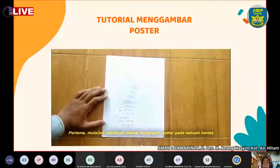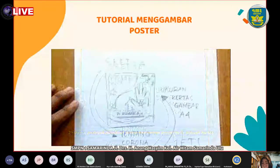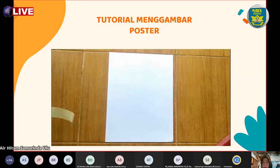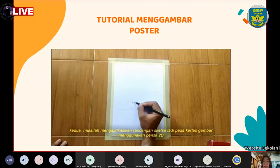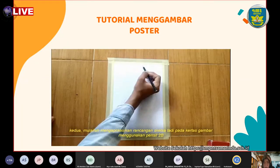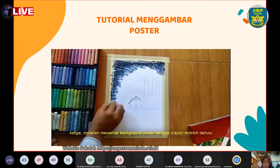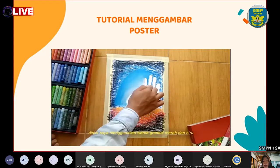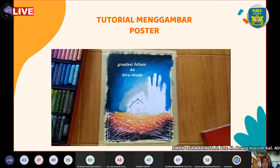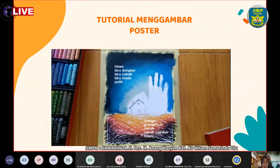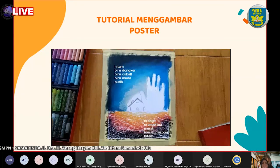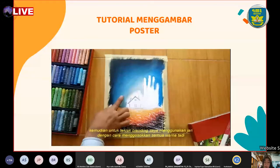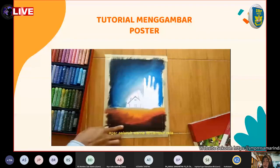Pertama, mulailah membuat sketsa rancangan poster pada sebuah kertas. Ini merupakan contoh sketsa poster yang hendak dibuat. Kedua, aplikasikan rancangan sketsa pada kertas gambar menggunakan pensil 2B. Ketiga, mulailah mewarnai background poster dengan crayon terlebih dahulu — di sini menggunakan warna gradasi merah dan biru. Untuk teknik blending, gunakan jari dengan cara menggosokkan semua warna agar tercampur rata.